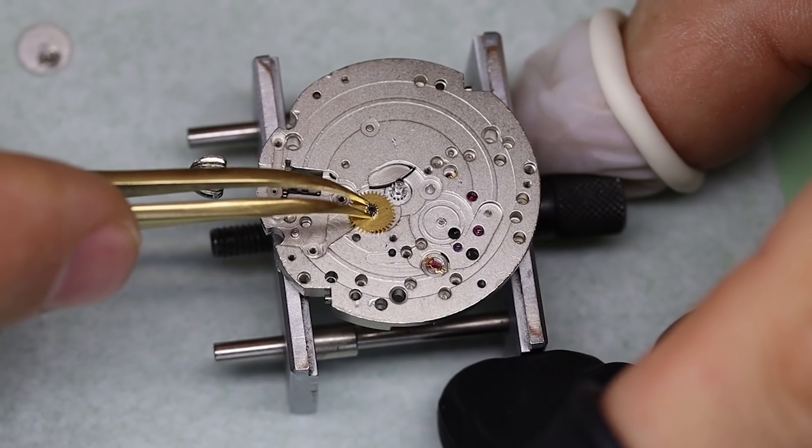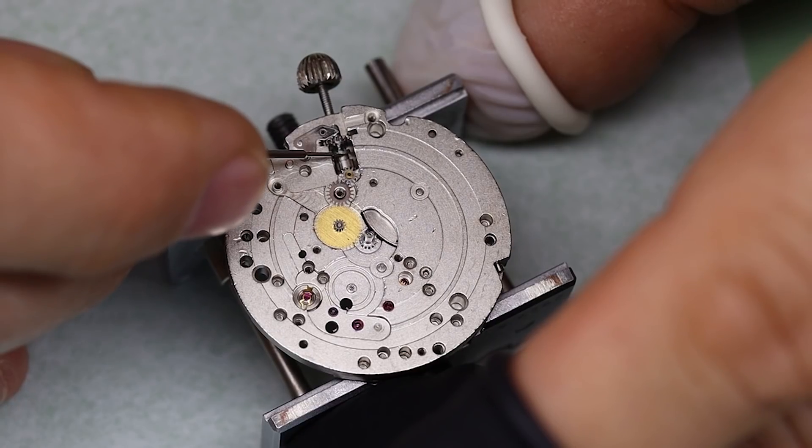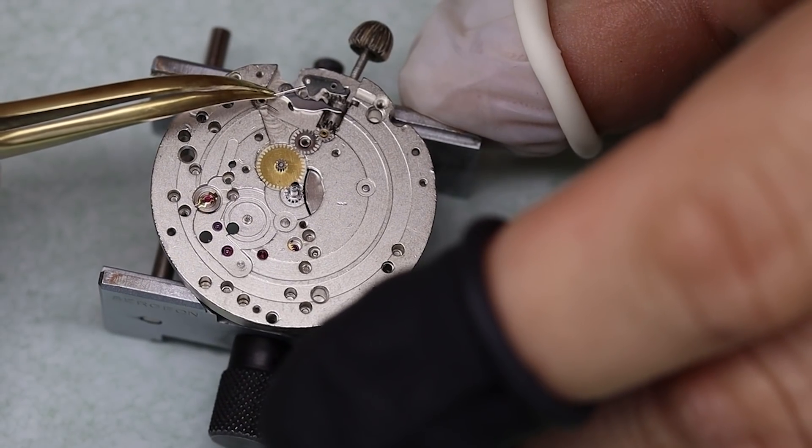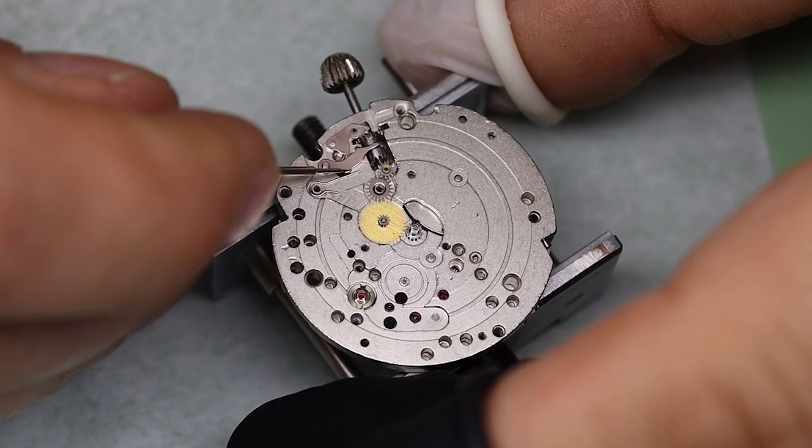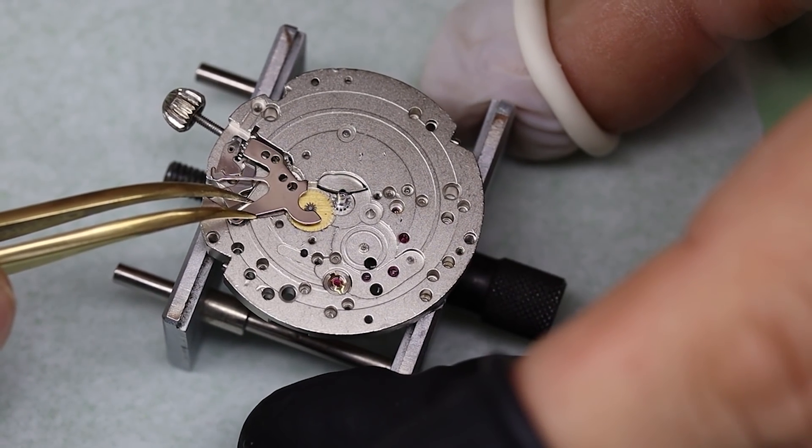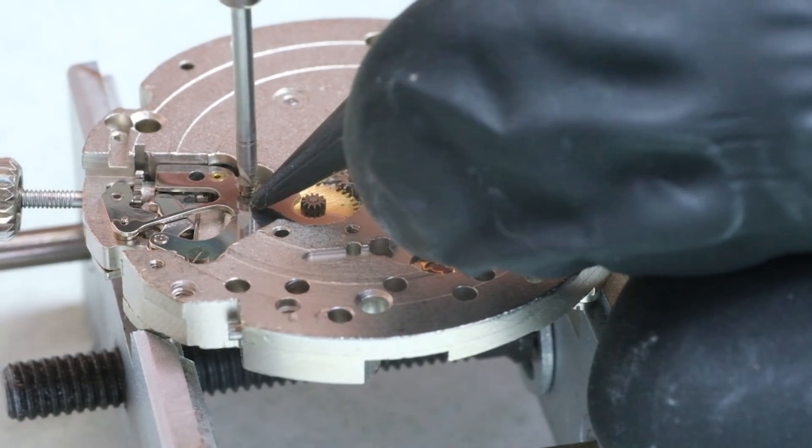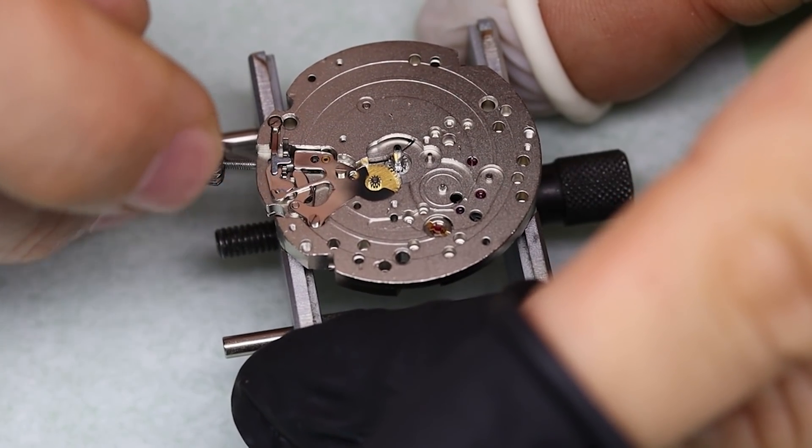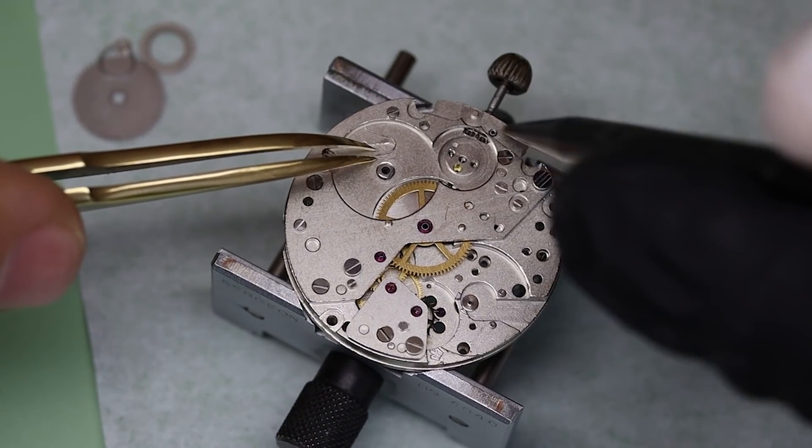The keyless works has that name because originally you needed a key to wind the watch. So if you find an old pocket watch, you might see that it has a couple of holes in the back. One would be for winding the watch with the key, and the other to set the time with the key. And then some clever guy named LeCoultre thought, hey, it would be easier to do this with the crown. All right, and there we have the keyless works assembled.